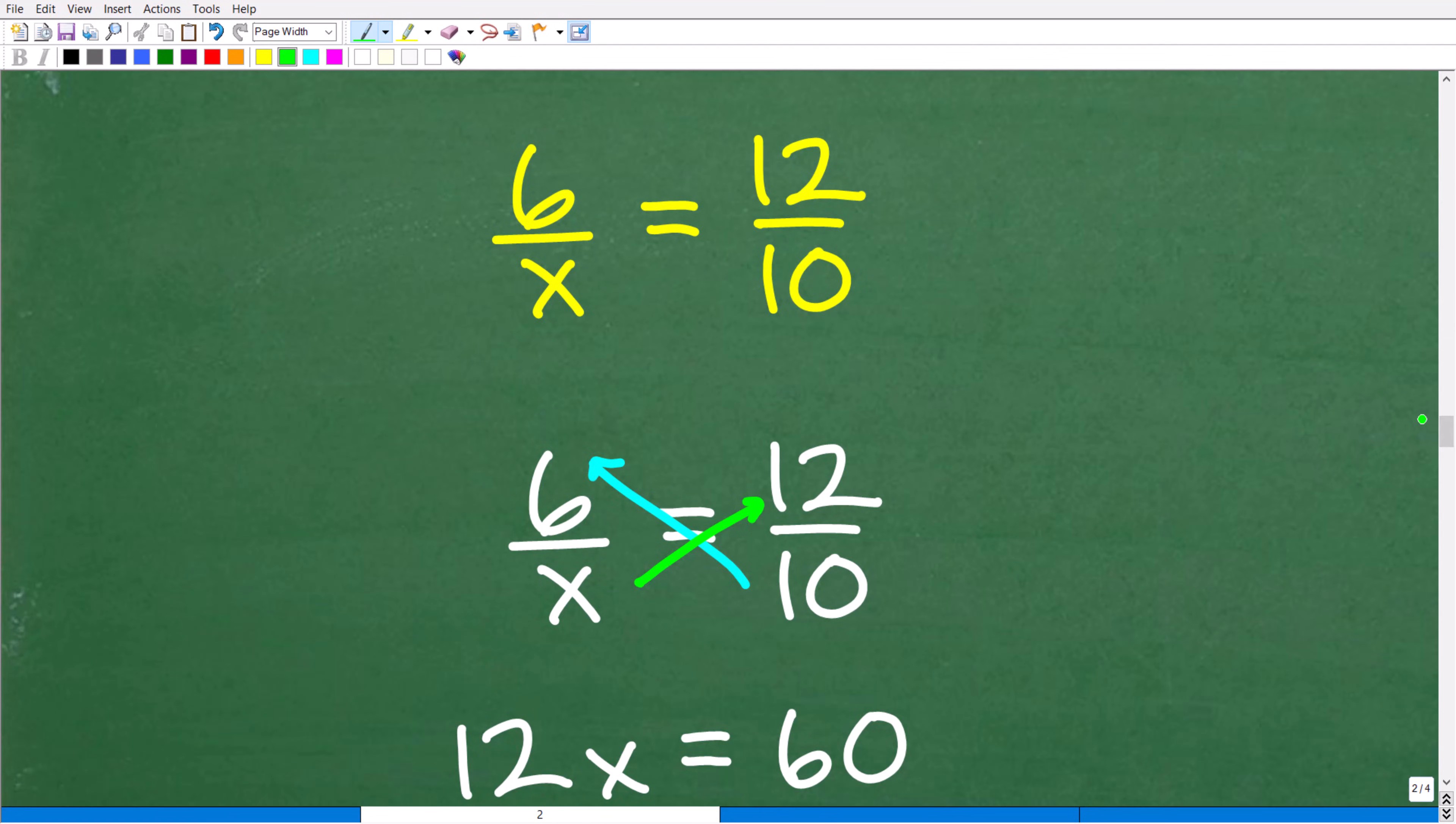So to solve a proportion, all we need to do is use the cross product. Remember, a proportion is two equal fractions. If I have the fraction 1 half is equal to 4 over 8, those fractions are equal. Well, if you notice here, if I go crosswise, multiply crosswise, i.e. the cross product, 1 times 8 is 8, and 2 times 4 is 8.